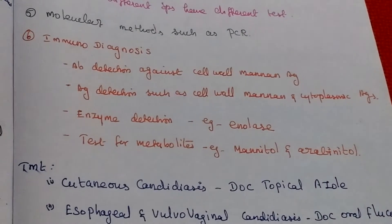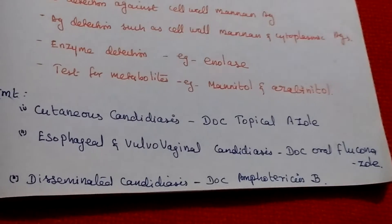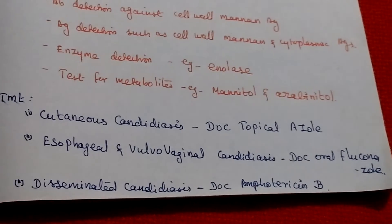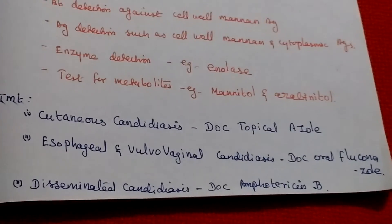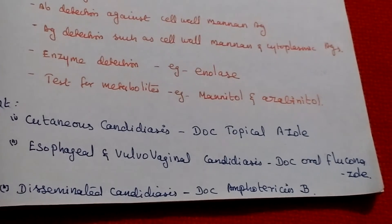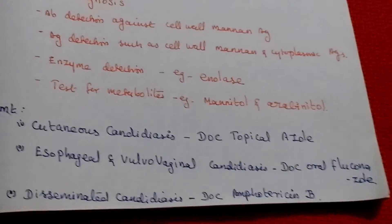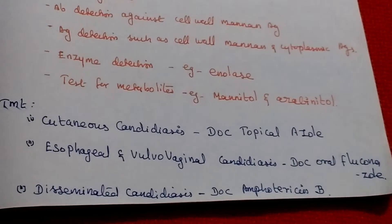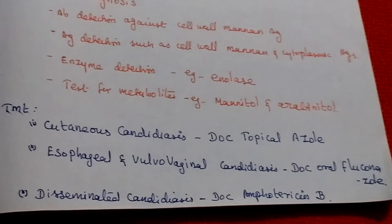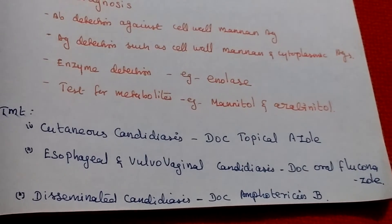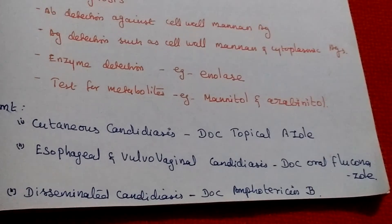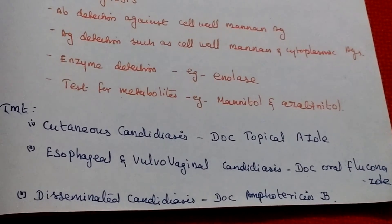For treatment: cutaneous candidiasis is treated with topical azoles; esophageal and vulvovaginal candidiasis is treated with oral fluconazole (azole); and disseminated candidiasis is treated with amphotericin B.